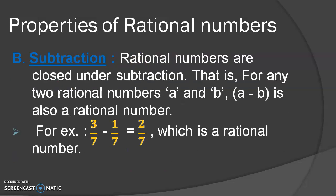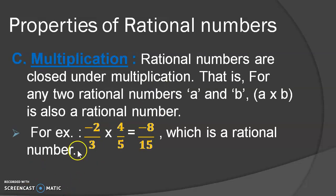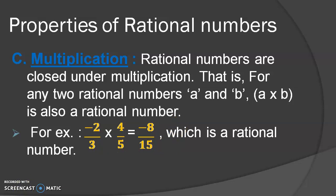The next is subtraction. In the same way, if we subtract any two rational numbers, the obtained result will also be a rational number. Hence, we can say that rational numbers are closed under subtraction. You can see the example given here. Next is multiplication. Similarly, if any two rational numbers are multiplied and the obtained result is also a rational number, then we can say that rational numbers are closed under multiplication. You can see the example on the screen.